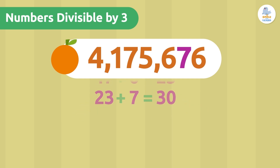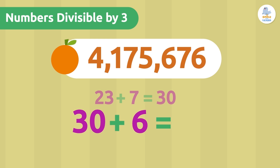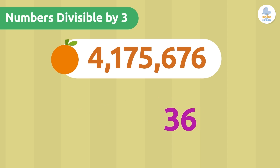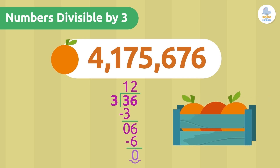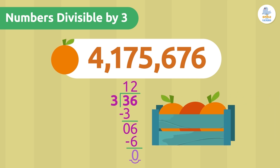...30, and 30 plus 6 is 36. Let's check if 36 is divisible by 3. Dividing 36 by 3, the remainder is 0. That means 36 is divisible by 3.